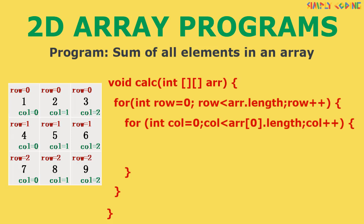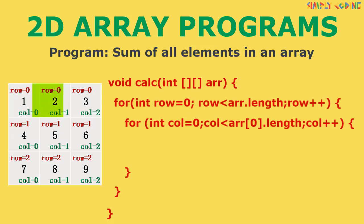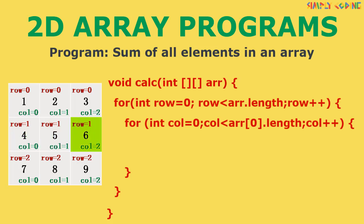We have learned the traversal loop earlier, where our outer loop manages the rows and runs till array dot length, which is the number of rows. The inner loop manages the columns and runs till array zero dot length, which gives us the number of columns. This loop starts from the first row, traverses all columns of that row, then goes to the next row and traverses all its columns, and so on. Inside the loop, we will do processing as per our program.